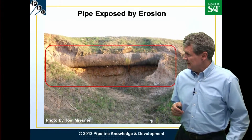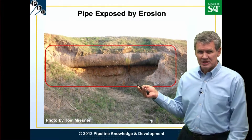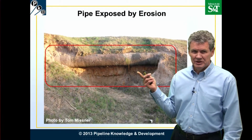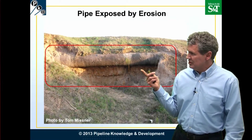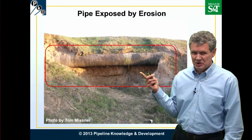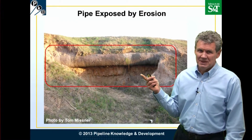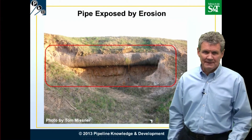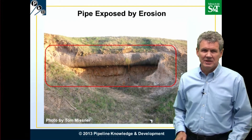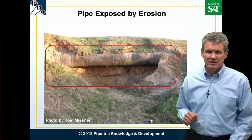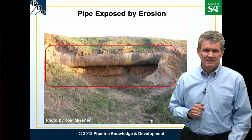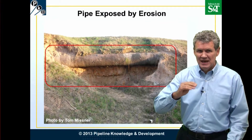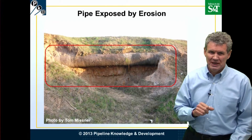Here you can see there's a pipeline where the side of the hill has washed out, and the soil is pushing against this pipeline, putting additional strain on it. A little tip: if you're ever out on the right of way and you see a pipeline going along the side of a hill with trees leaning on that hillside — they didn't grow crooked. The hill is moving down; it's sliding and putting additional stress on your pipelines.